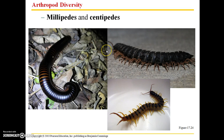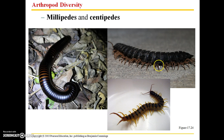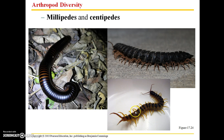Then we have the millipedes and centipedes. If you are wondering how to tell the difference between a millipede and a centipede, you just have to look at an individual body segment. If there are two legs emerging from a single body segment it's a millipede, and if there is a single leg emerging from a body segment it's a centipede.